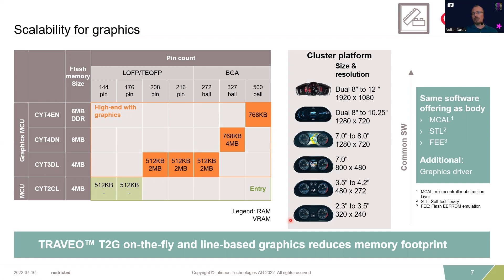On this table you can see the different cluster sizes we can support — on the lower end we have the typical hybrid clusters, then the first digital clusters, and then up to full HD sizes.